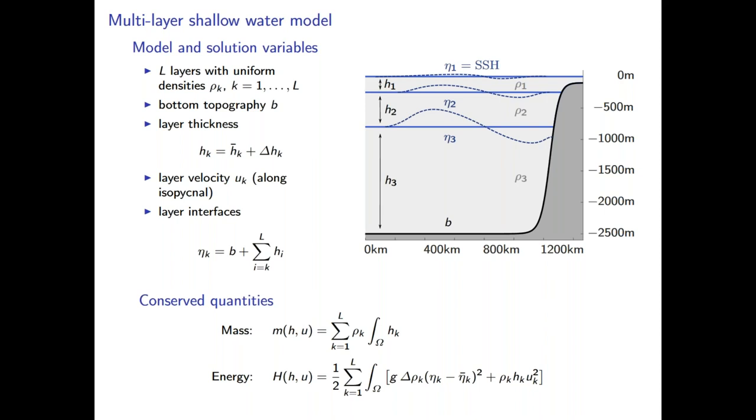And then the two main quantities that we care about here are mass. So we always want to have global mass conservation, of course, but we also look a lot at energy because not only because it's a physical quantity, but also because energy conservation has something to do with numerical stability.